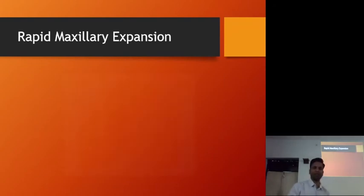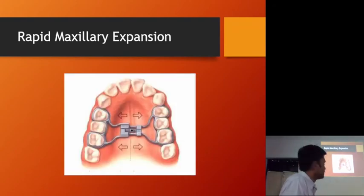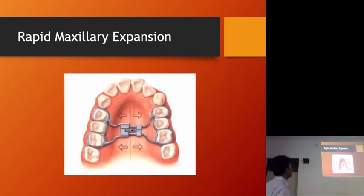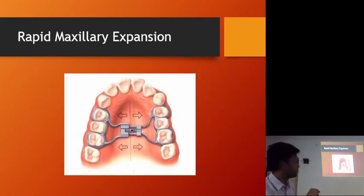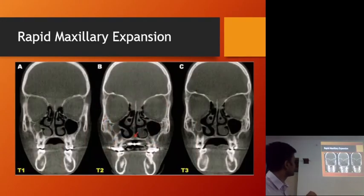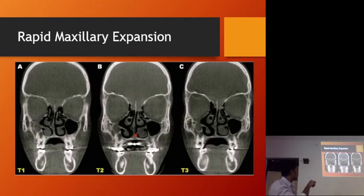Then we have rapid maxillary expansion. This is an example of a bone-bone distractor device. You can see the radiograph: before osteotomy, after osteotomy and distraction, and then the fibrous callus being ossified and bony callus formed, with an increase in the width of the maxillary arch.